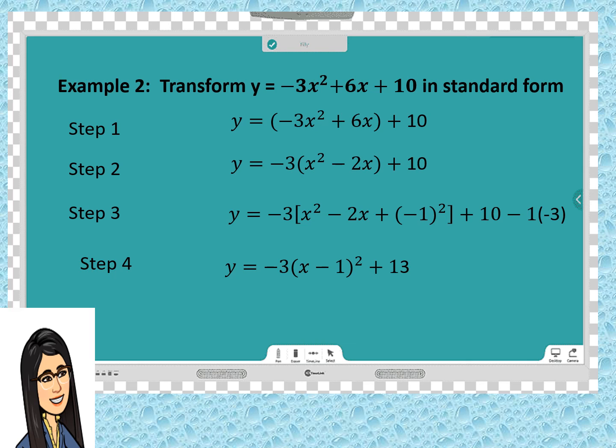We will get y = -3(x - 1)² + 13. So, the vertex is (1, 13).